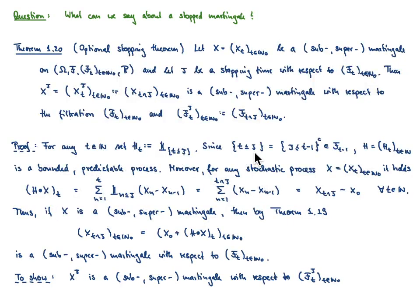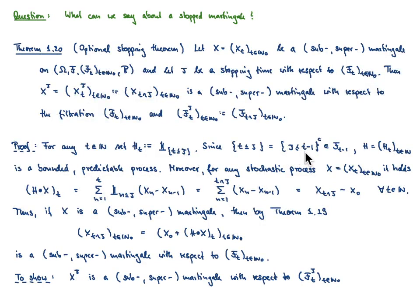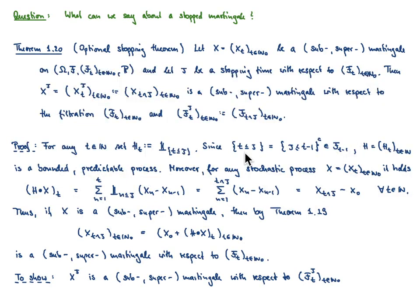The event that t ≤ τ can also be expressed via its complement: the complement is the event that τ ≤ t−1. We know that the event τ ≤ t−1 is contained in the sigma-algebra F_{t−1}. Since sigma-algebras contain complements of their events, the event t ≤ τ is also in F_{t−1}. Hence H_t is F_{t−1}-measurable, which tells us the sequence H_t is a bounded predictable process.